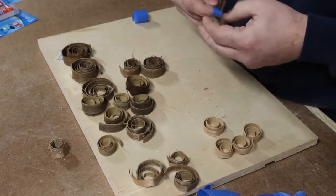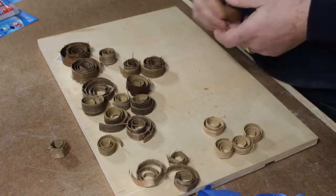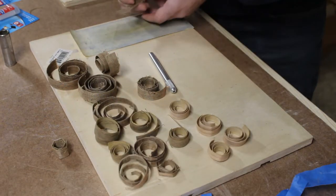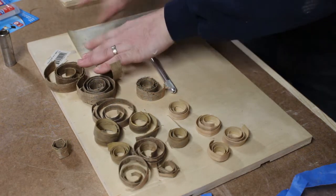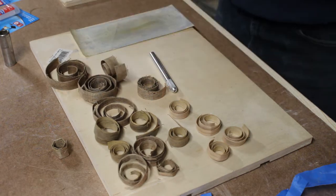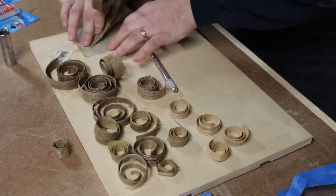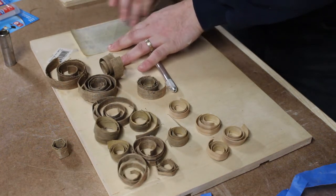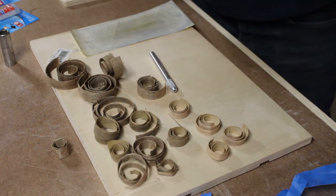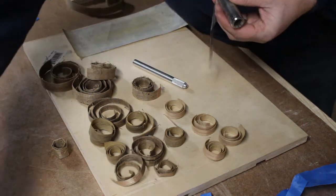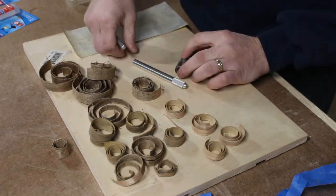I took the ring sizes that I needed and found the closest deep well socket that I had in that size and put a layer of packaging tape on it. This helps the glue not stick to the socket and helps with taking off the ring later on. I would recommend that you pick a socket slightly smaller than what you want to end up with, since you're going to be sanding the inside wall of these rings and you want it to be comfortable to wear. I ended up using a 14 millimeter and a 12 millimeter socket for the two sizes of rings that I needed.